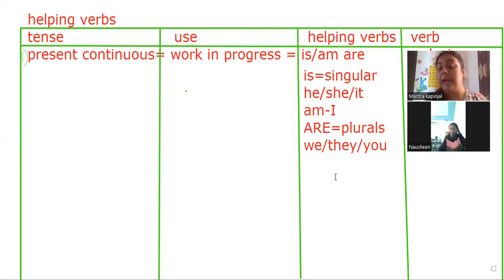Like Noshin is studying. Currently, what are you doing? You are studying. Currently, what am I doing? I am teaching. My work is not finished yet. In this condition, I am using helping verbs is, am, are and I am using verb plus ing.